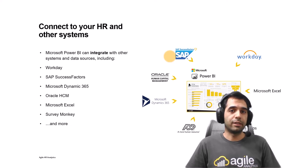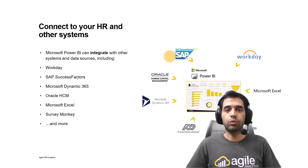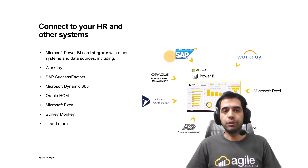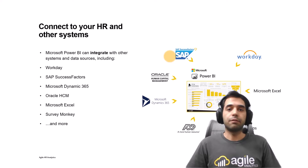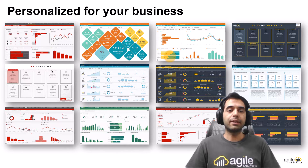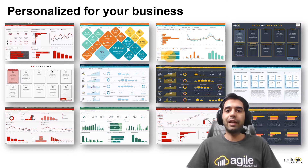You can bring in data from different sources like SAP SuccessFactors, Workday, Oracle HCM, or any other HCM platform that you are using. You can even combine your HR data with flat files or even online surveys. And finally, you can customize Agile HR Analytics based on your color palette and branding. Now let's talk about the new features of Agile HR Analytics version 4.5.